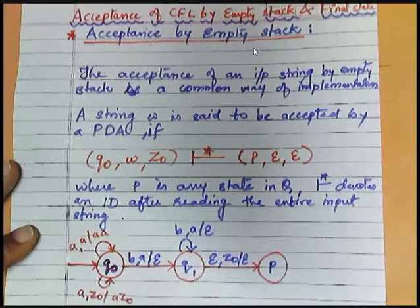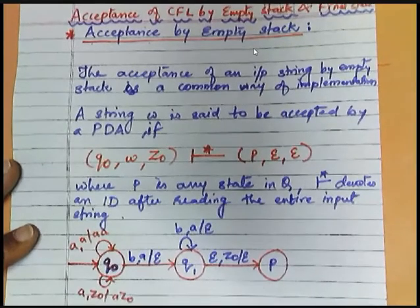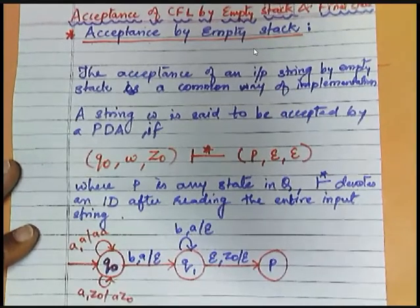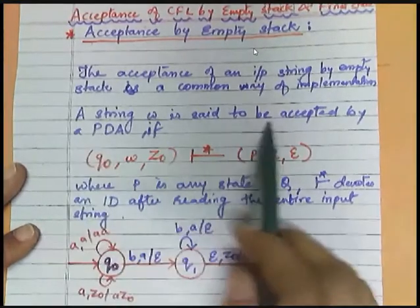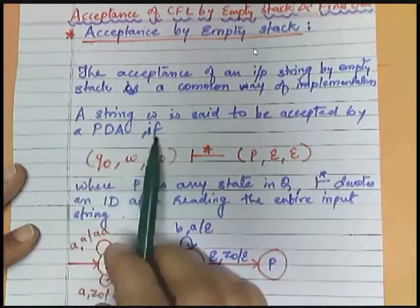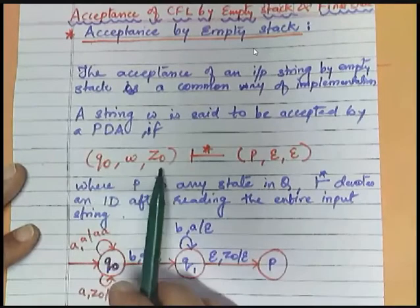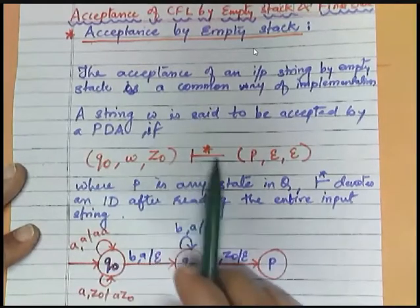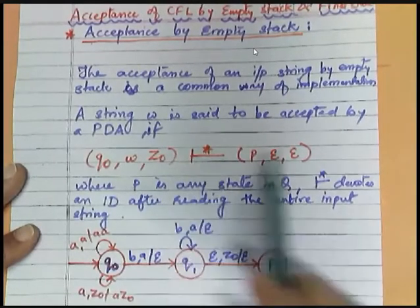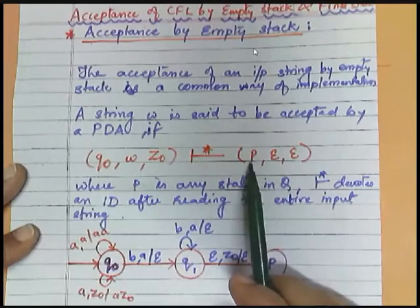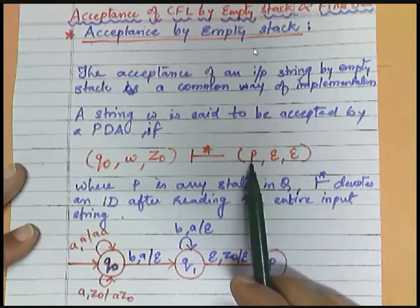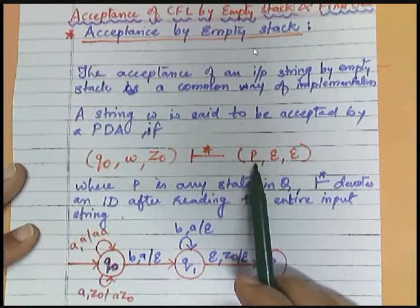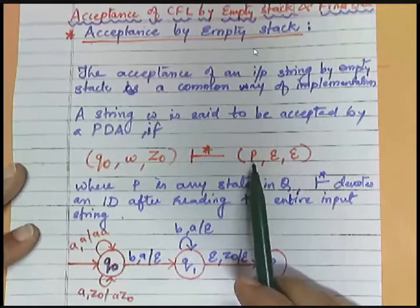How it is represented: a string w is said to be accepted by a PDA if (q0, w, z0) after multiple steps reaches to an ID which is represented by (P, ε, ε), where this P is indicating a state which we are not nominating as final or anything, it is just any state.